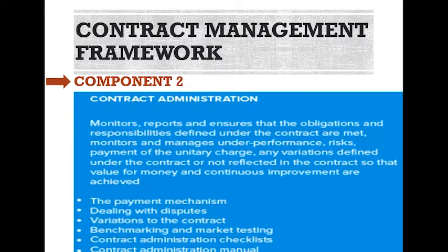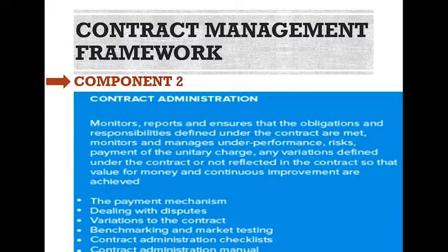Component 2: Contract administration. This monitors, reports, and ensures that the obligations and responsibilities defined under the contract are met. It monitors and manages underperformance, risk, payment of the unitary charge, and any variations defined under the contract, so that value for money and continuous improvement are achieved. This includes the payment mechanisms, dealing with disputes, variations to the contract, benchmarking and market testing, a contract administration checklist, and a contract administration manual.